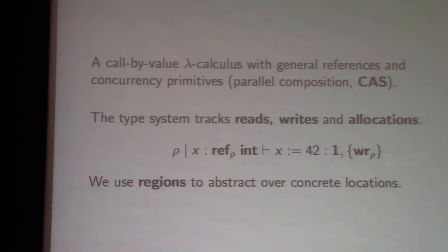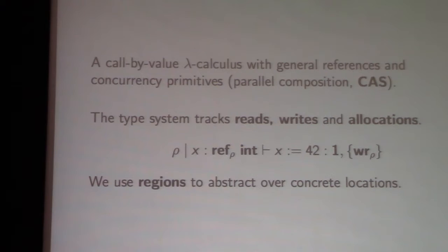Here's a simple example to illustrate. We have an assignment of 42 to a variable X, where X is an integer reference. The integer reference belongs to a region row, and regions just abstract over sets of locations. We also annotate the typings with an effect mask that gives an over-approximation of possible effects — this says the expression may write to a reference in region row. We're interested in using this to justify optimizations, so we also want some way of restricting or specifying interference from the environment.